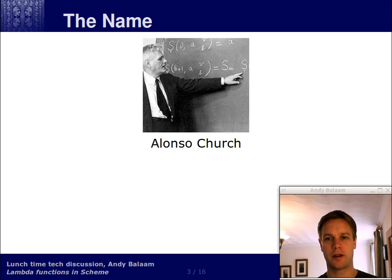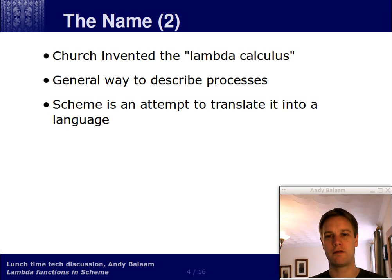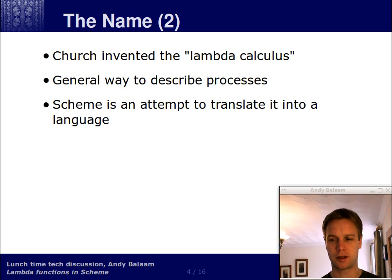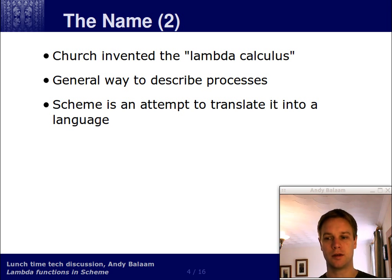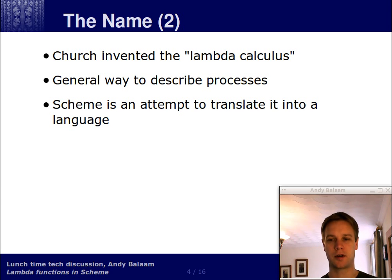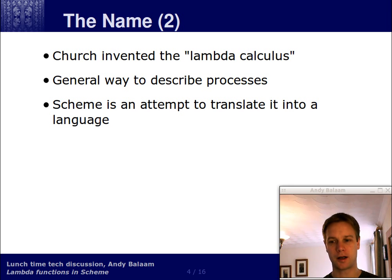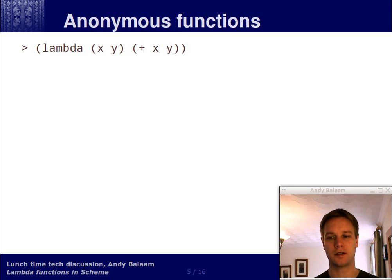Let's move on to the name Lambda functions. Here's Alonzo Church, a cool looking guy. Alonzo Church invented this thing called the Lambda calculus, which is a way of describing processes in a mathematical form. It was a piece of maths used to describe processes, or what we might call now programs. And Scheme, the whole language really, is an attempt to translate the Lambda calculus into an actual programming language that you can use to program computers. So in a way, Scheme itself should be called Lambda. But the bit of Scheme that's called Lambda is the bit which is the core of the Lambda calculus.